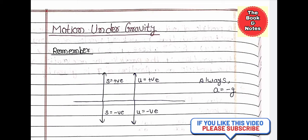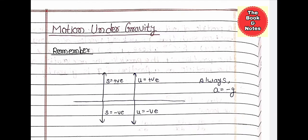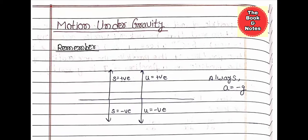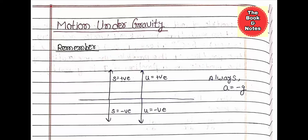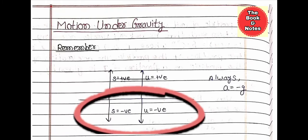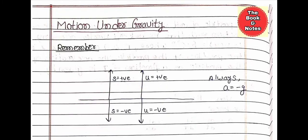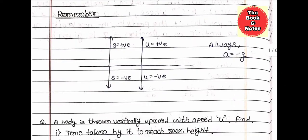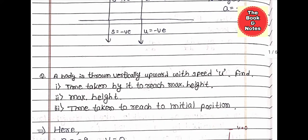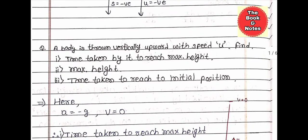Hi everyone, welcome to Book and Notes. This video is Part 3 of Kinematics, Class 11th Physics. Here motion under gravity will be discussed. We have to remember some important points: the value of s and u will be positive above the surface, negative below the surface, and acceleration will always be negative g.